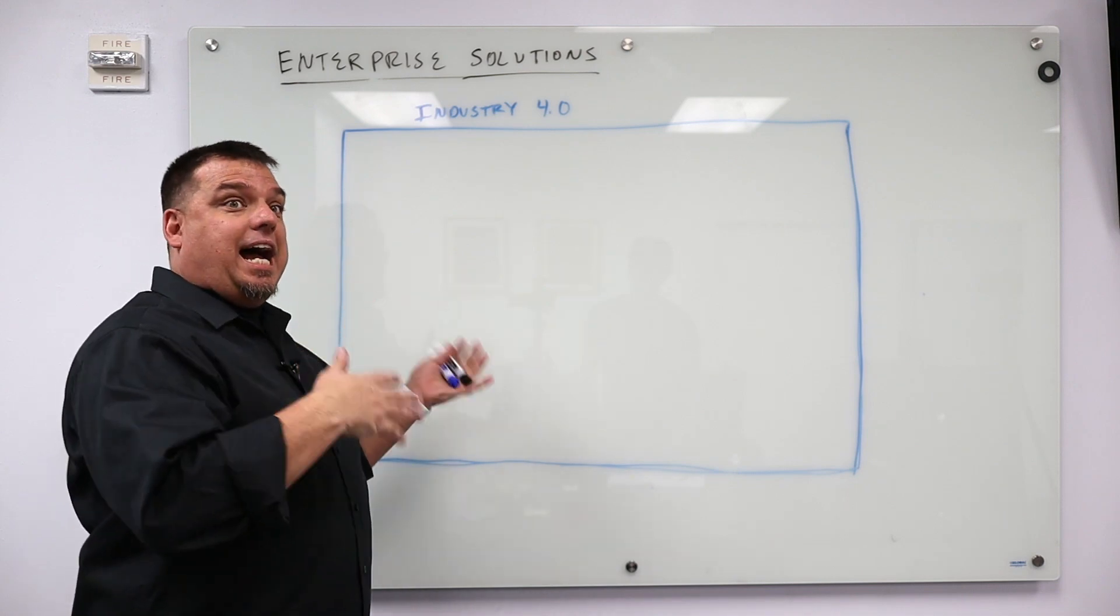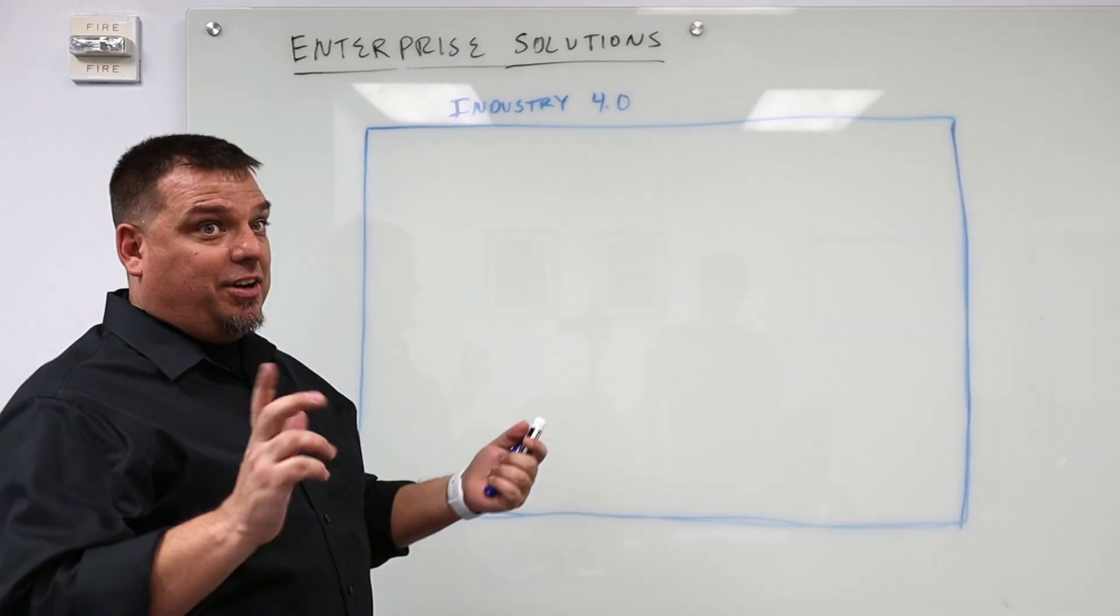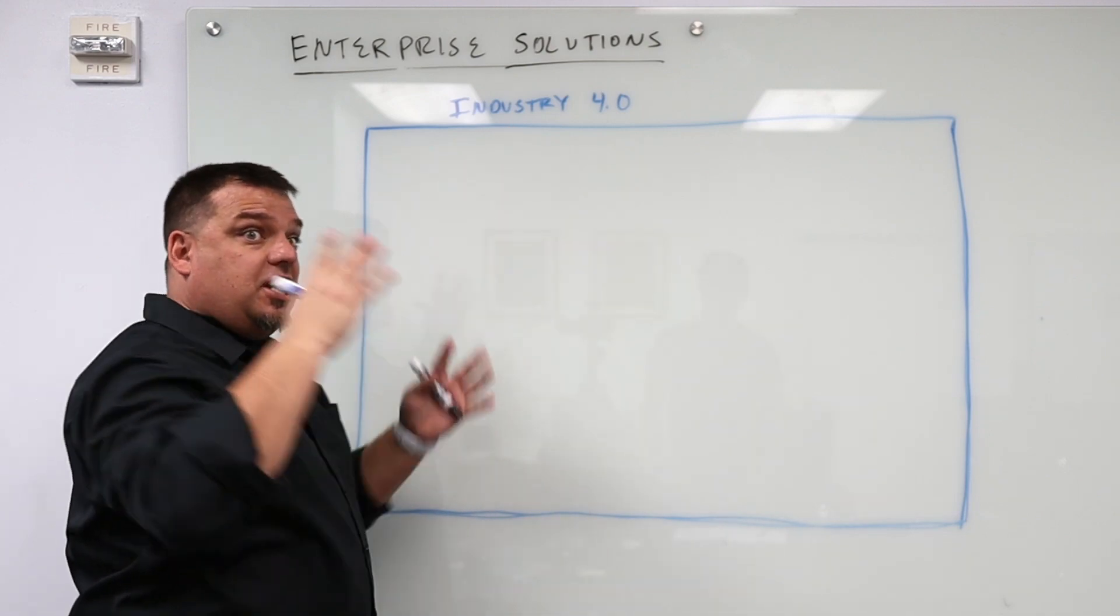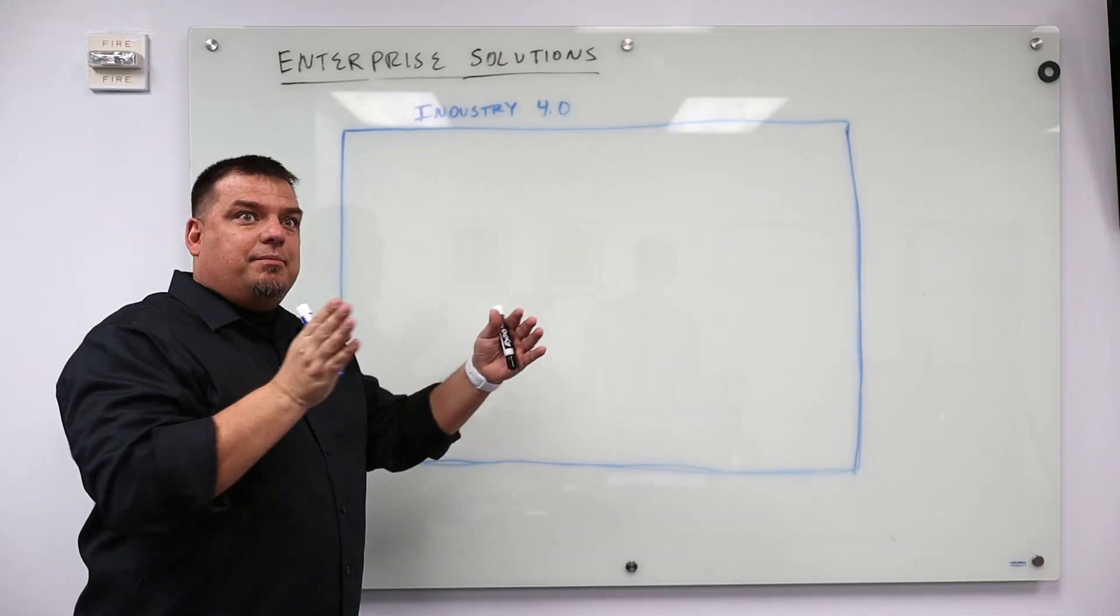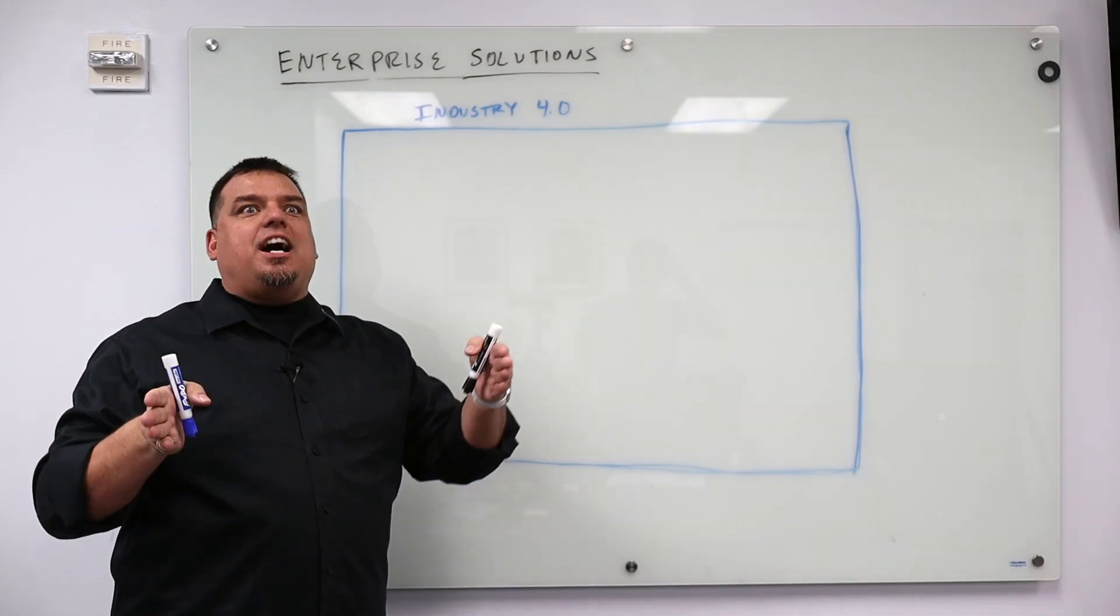What is the difference between IIoT, Industry 4.0, and the digital factory? Very simple. Industry 4.0 is essentially the paradigm. It is the time, it's the space we are in the timeline right now.